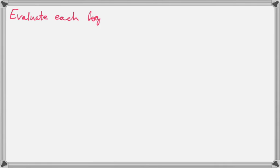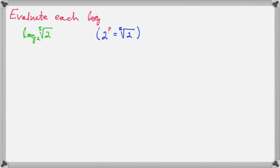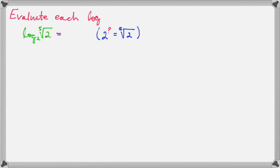Now we're going to get a little more log practice. Let's look at log base 2 of the fifth root of 2. When you start looking at these radicals, if you'll always switch it into exponential form, it'll become very easy. So 2 to some power equals the fifth root of 2. The power that does this has to be 1/5, because the index of your radical always shows you the bottom of your exponent. So that is simply 1/5.